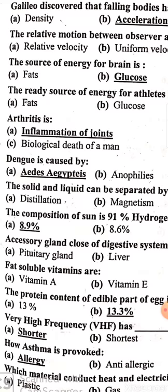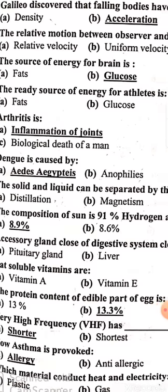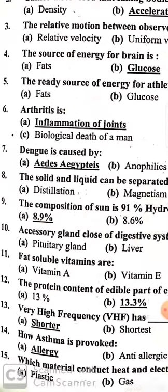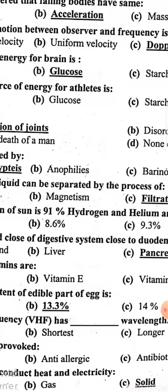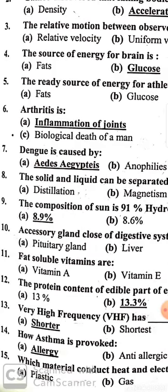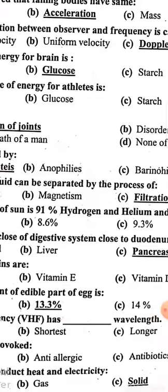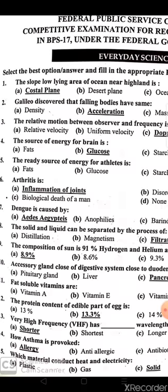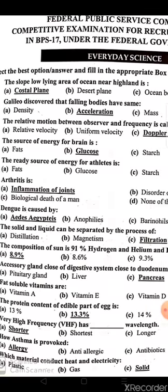The composition of the sun is 91% hydrogen, and the remaining 8.9% is helium and heavy metals. The accessory gland closest to the duodenum in the digestive system is the pancreas.